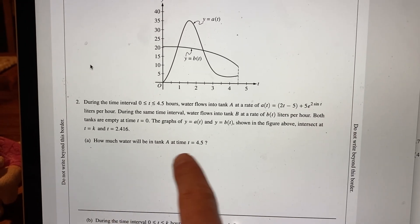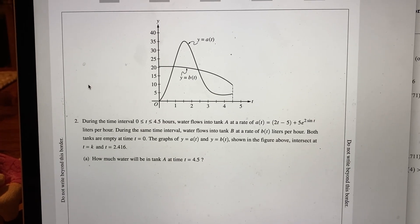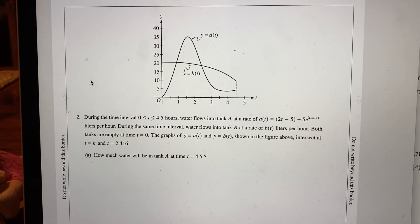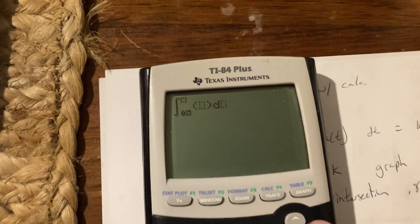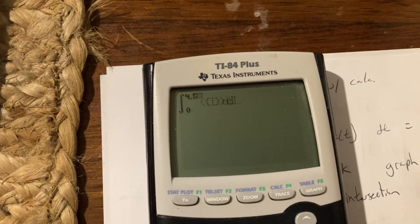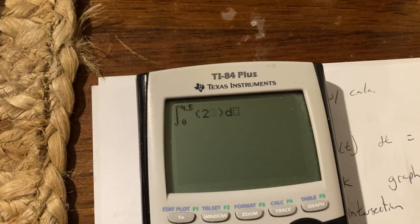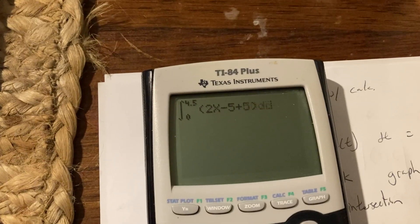It says how much water will be in tank A at time 4.5. All it is is from 0 to 4.5, find the integral of that fella. So here we go. Math 9, integral from 0 to 4.5, and we have a(t) is 2x minus 5 plus 5